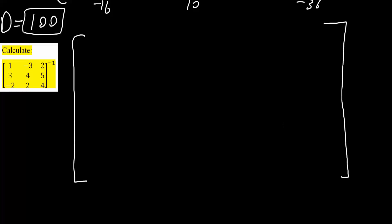I will calculate a matrix — essentially 9 two-by-two matrices. Starting with the first one: I'm going to cross out the first row and first column, and I'm left with 4, 5, 2, 4. I'm replacing this element with that 2x2 matrix.